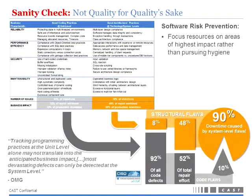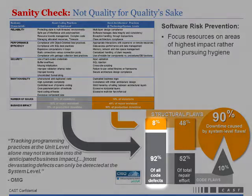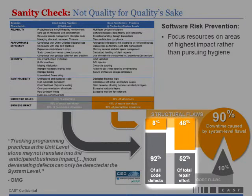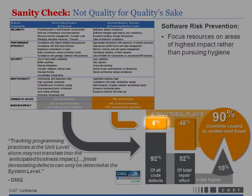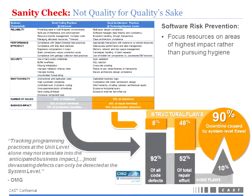Why does structural quality even matter? Structural flaws account for about 8% by volume of the overall flaws found in the code. But when you look at how much effort it takes to fix and remediate those things, it goes to almost half. And 90% of downtime is caused by only 8% of design-level or structural-level flaws. So when you're an IT executive answering to the CEO, you really want to make sure you tackle the structural part — the part that really impacts the business.